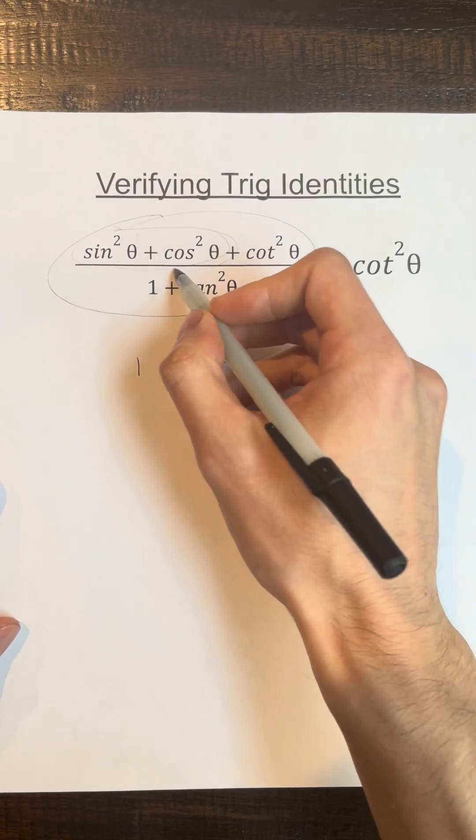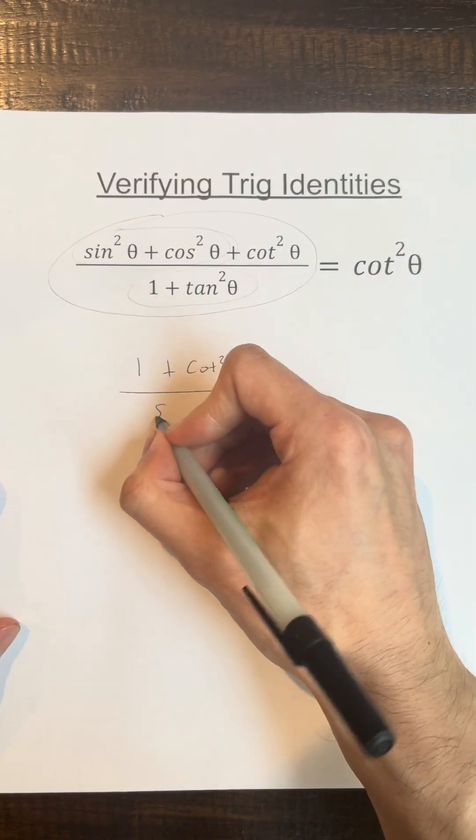And you also need to remember 1 plus tangent squared theta is equal to secant squared theta.